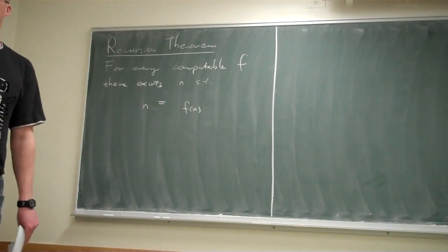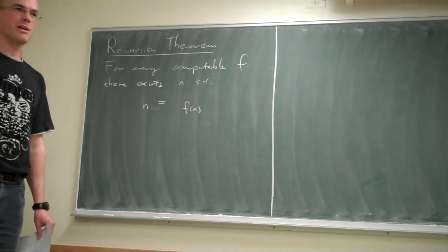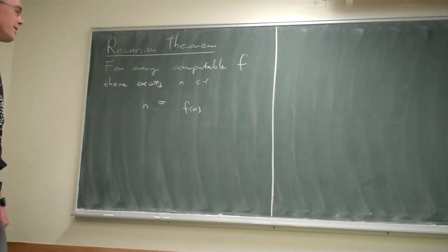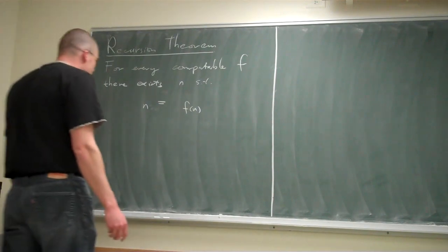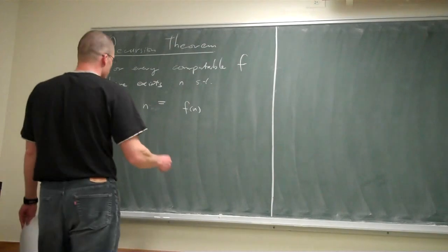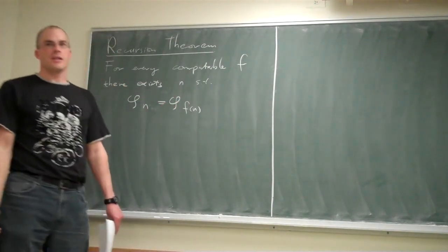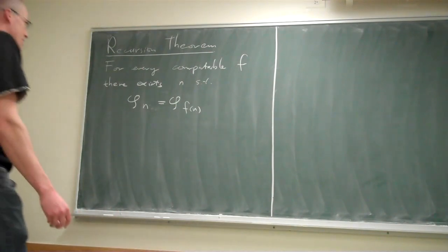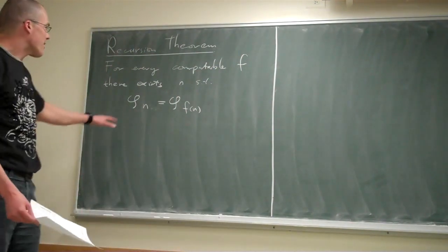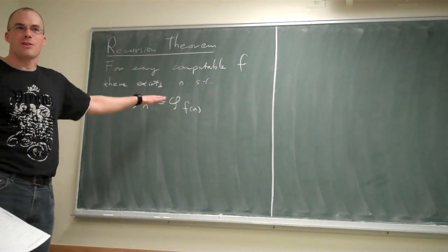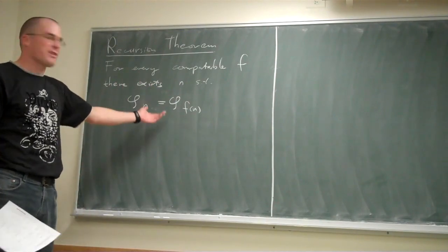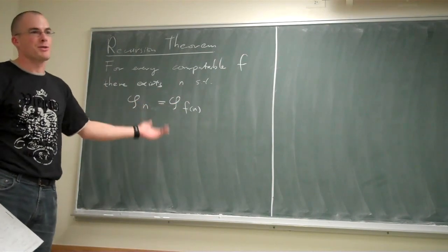You can tell there's something funny about this equation. This would be a very nice theorem, but it's plainly false — the successor function is a counterexample. This is the kind of idea we are after: a fixed point theorem. What we can have instead is a fixed point in the sense that n and f(n) represent the same partial computable function.